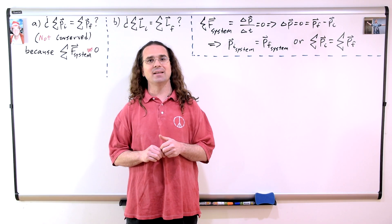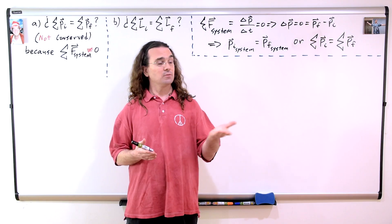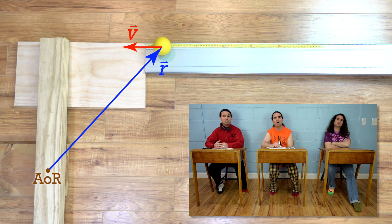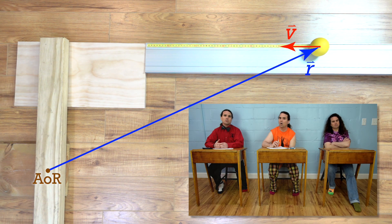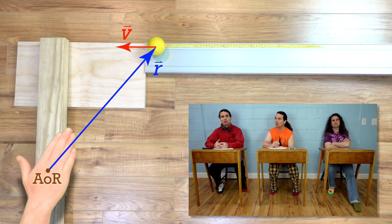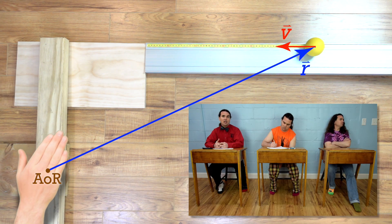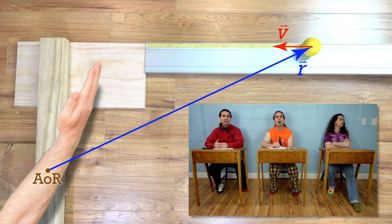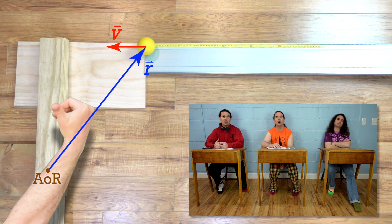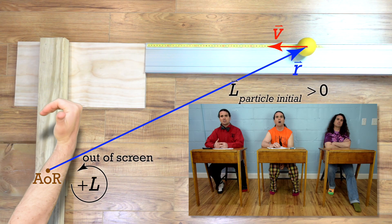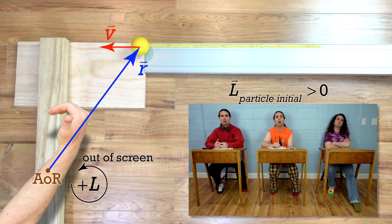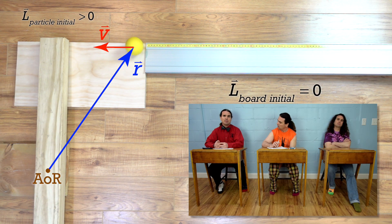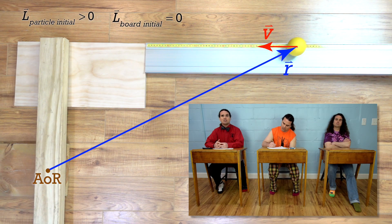Now let's talk about conservation of angular momentum. Again, let's start with directions. Billy? Okay, as the point particle is moving toward the board, it has angular momentum which is, according to the right-hand rule — we start with our fingers at the axis of rotation of the board, which is the point the board rotates around, and point our fingers from the axis of rotation to the center of mass of the point particle. Then we curl our fingers in the direction of the velocity of the point particle and stick out our thumb. Our thumb points out of the screen, so that is the direction of the angular momentum of the point particle before the collision. At this point, the board is not moving and has zero angular momentum. So before the collision, the system has angular momentum which is out of the screen.